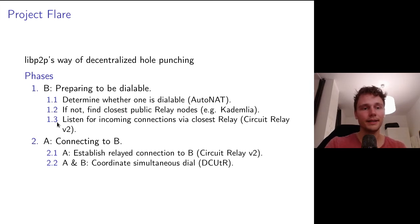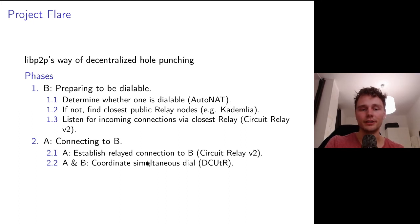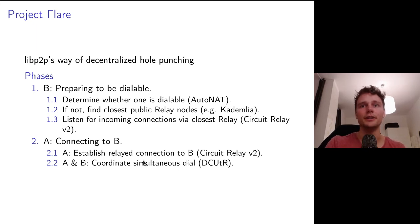In the second phase of Project Flare, A wants to establish a connection to B. What A would do first is establish a relay connection to B, and over that relay connection then coordinate the simultaneous dial — the hole punch — which is the little magic I mentioned earlier.